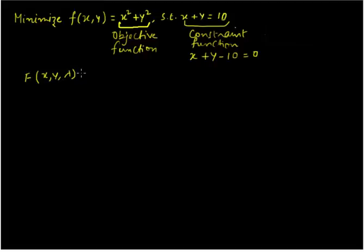So in the Lagrangian function, we are going to combine the objective and the constraint functions. The objective function is x squared plus y squared, and we are going to add on the constraint function to it by using the Lagrangian multiplier. This is how we do it.